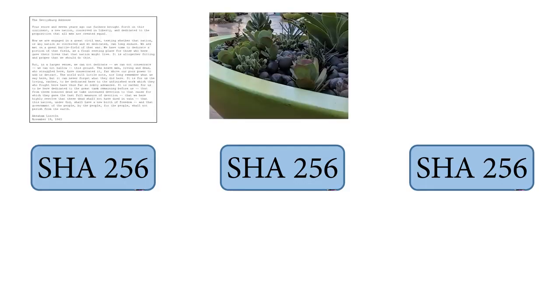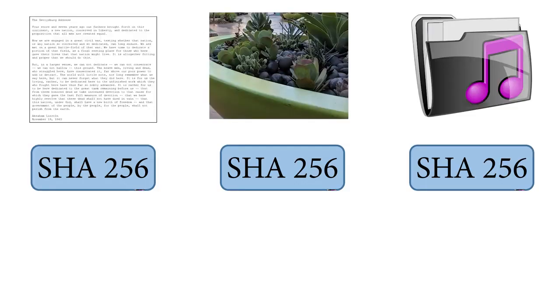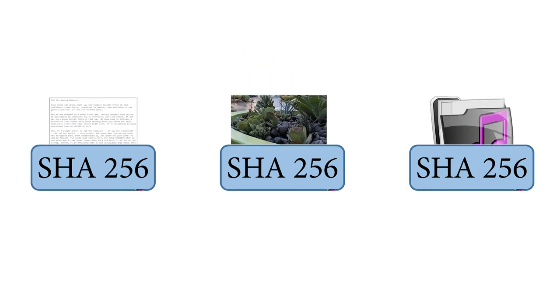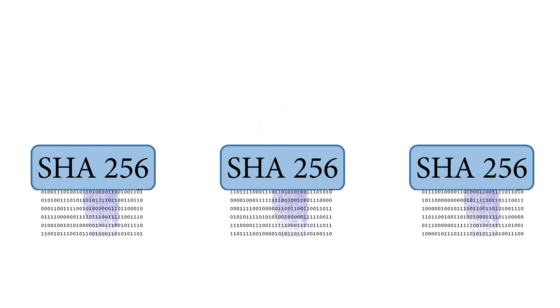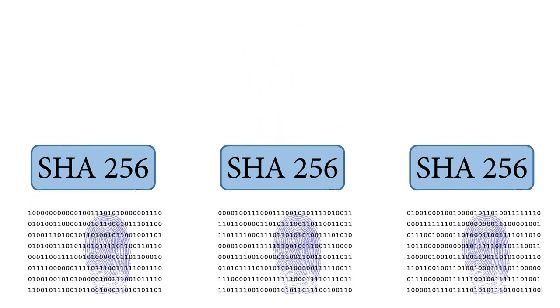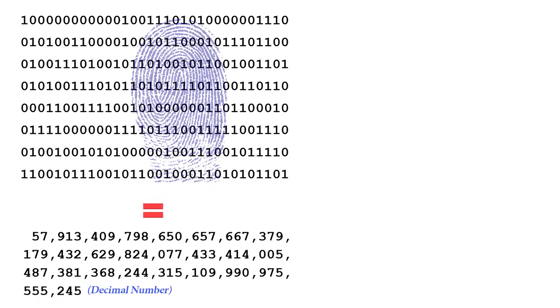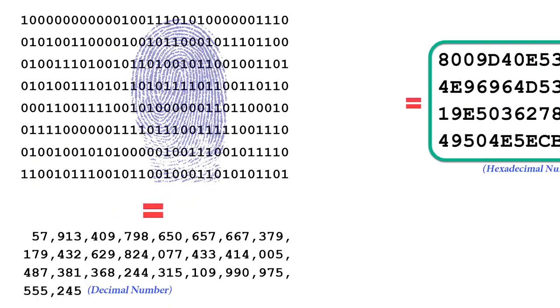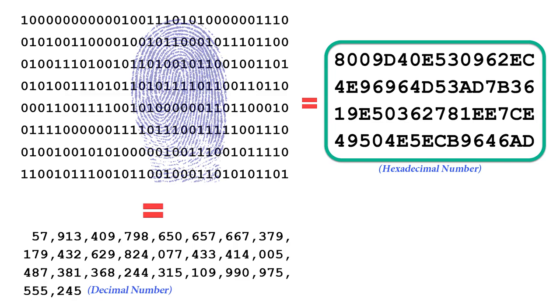SHA-256 is an algorithm for a one-way hash function that takes any kind of digital input and any length of input, and always outputs exactly 256 bits — or 256 ones and zeros — which is basically a big long number, usually written as 64 hex digits like this.